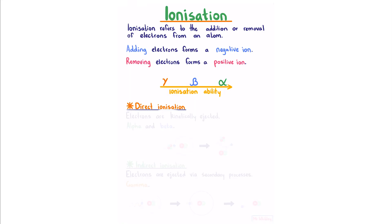Direct ionization is where electrons are kinetically ejected. This method is used by alpha and beta radiation. So here we see an alpha particle kinetically ejecting an electron from an atom.